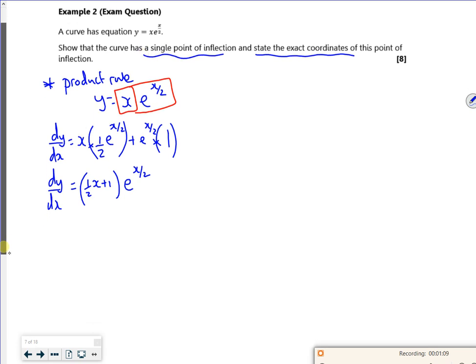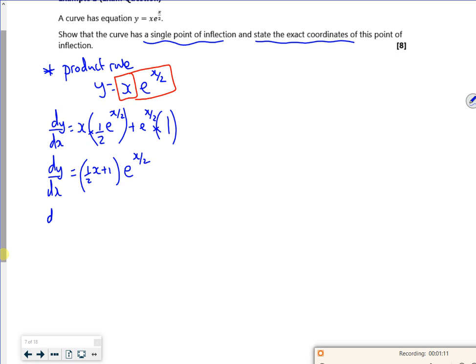So if I differentiate it again now, because I'm going to do d2y by dx squared, I've got the product rule again. So first bit, a half x plus 1, second bit differentiated, a half e to the x over 2.